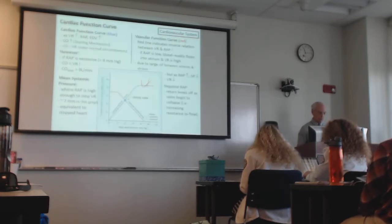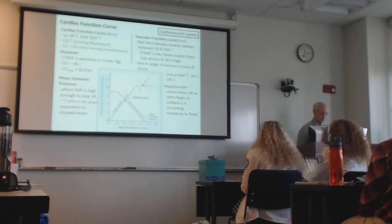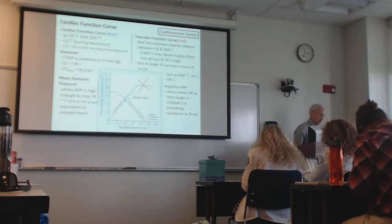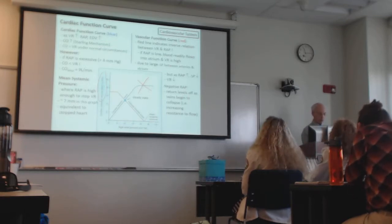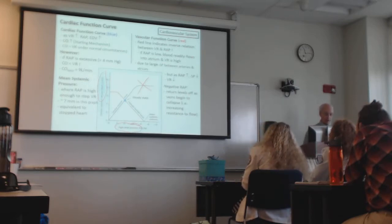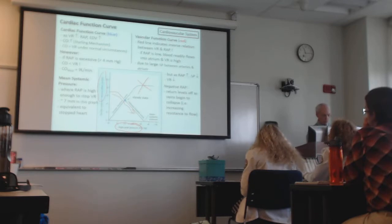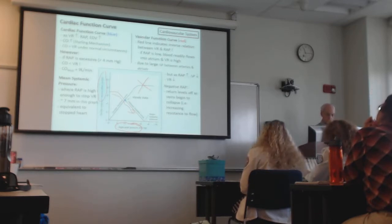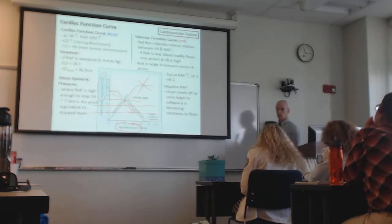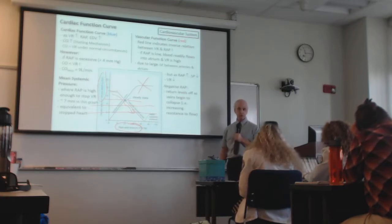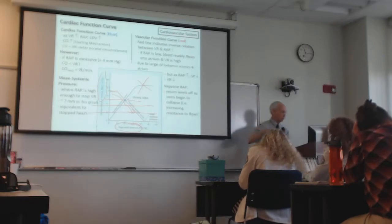Looking at the venous return curve — focusing on the red line — as we increase right atrial pressure, venous return goes down. It starts high and decreases as right atrial pressure increases. This is one of the fundamental guidance principles: delta P is critical to maintain adequate perfusion through the tissues.